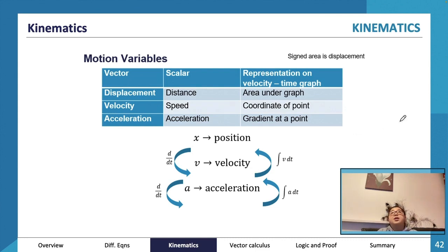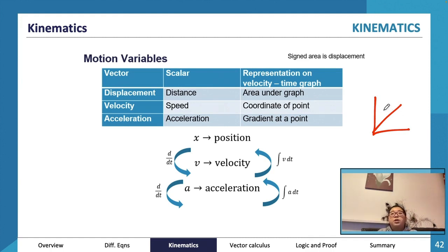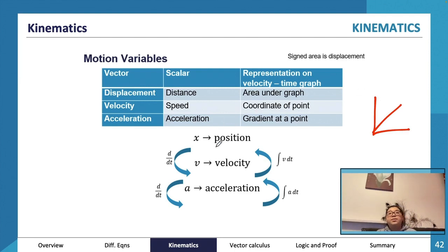A velocity-time graph is useful because everything on it indicates something. The gradient indicates acceleration, the coordinate indicates velocity, and the area under the graph indicates displacement or distance depending on how you calculate it. Going from position to velocity to acceleration, you differentiate; going the other way, you anti-differentiate.